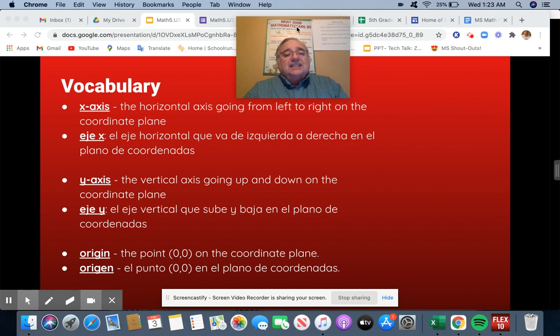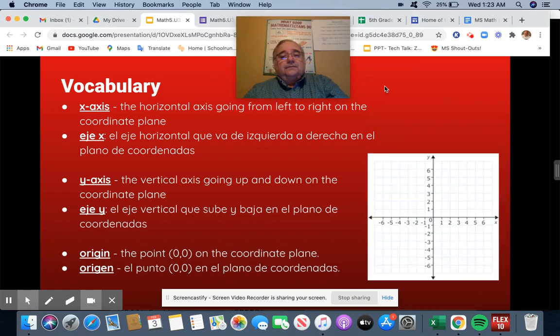For example, your x-axis is the horizontal line going from left to right. Your y-axis goes up and down, and your origin is the point (0,0).